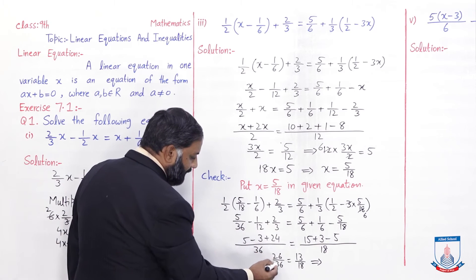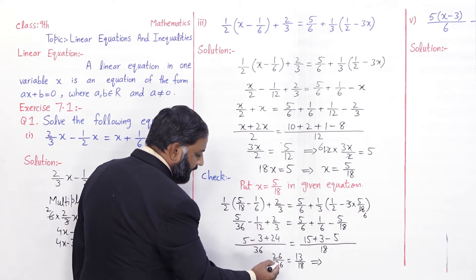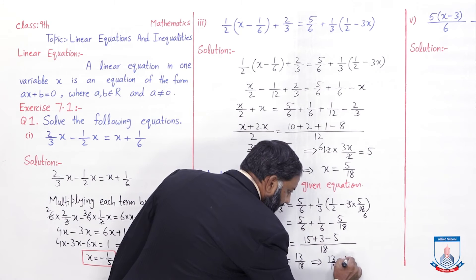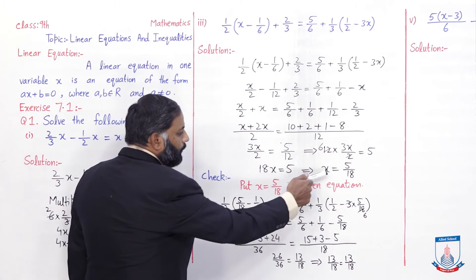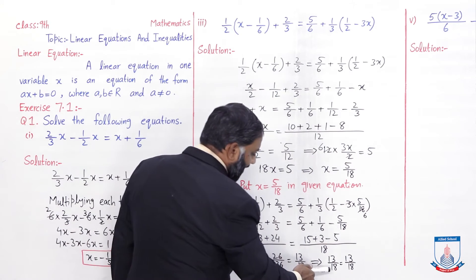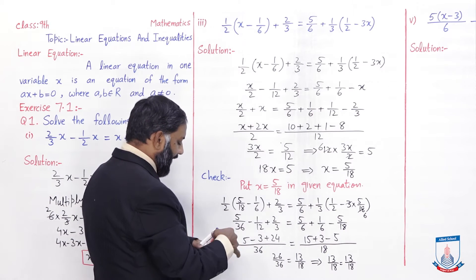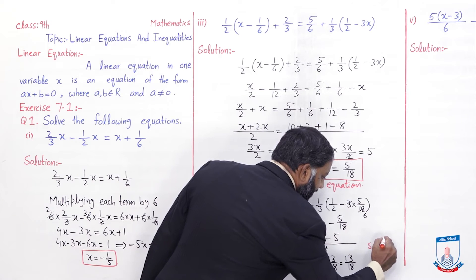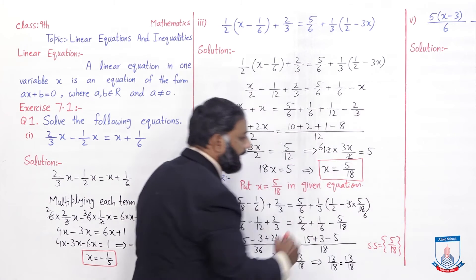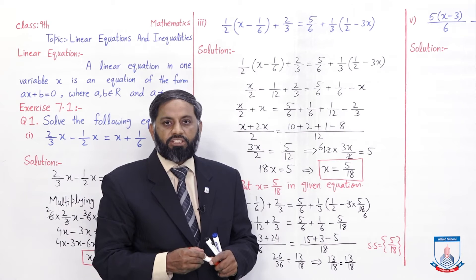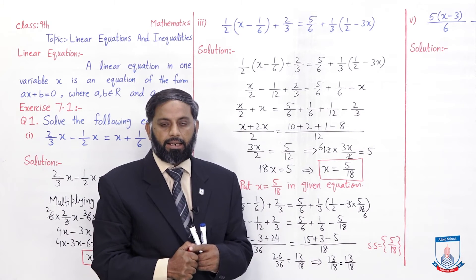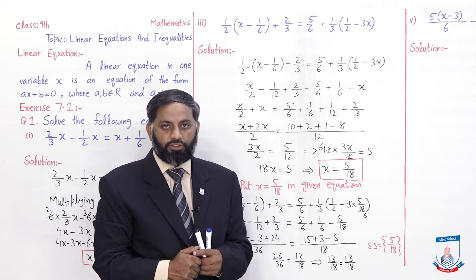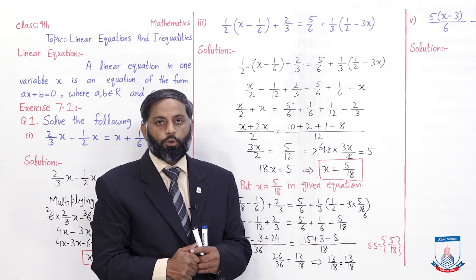To x ki value 5/18 given equation mein humne put ki, to both sides ka result same aaya, isliye yeh jo x ki value nikli hai, 5 over 18, yeh hamare solution hoga. Solution mein aapne end pe likh dena hai: solution set = {5/18}. Jo last board pe maine question solve karwaya, usme bhi check karna zaroori hai. Isi method se aap wahan pe bhi check karenge. Agar jo value x ki nikli thi, woh given equation mein put karke both sides of the equation same result dein to solution hoga, otherwise no solution likha jayega.